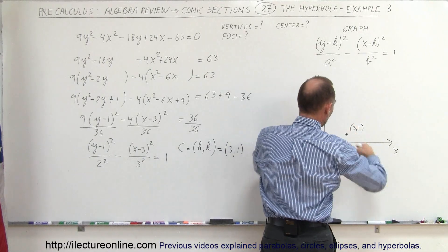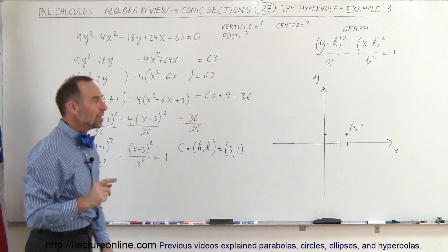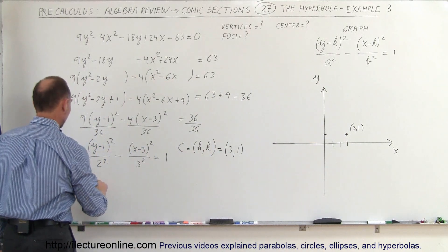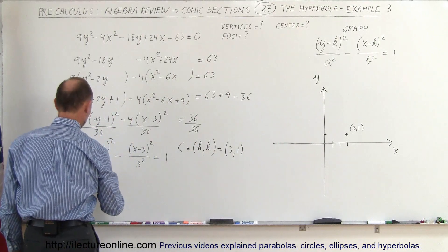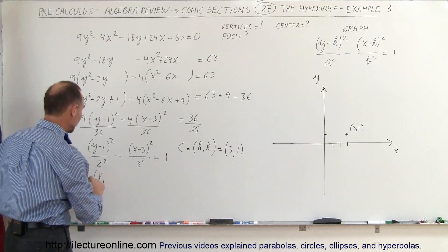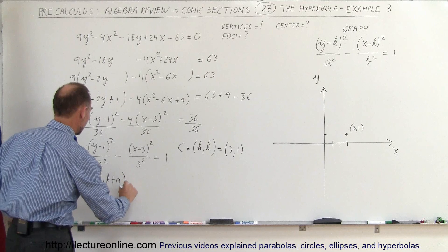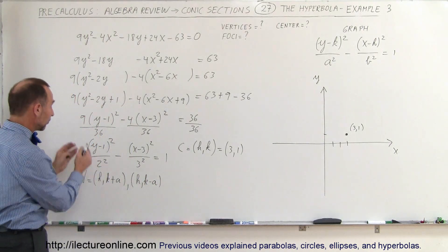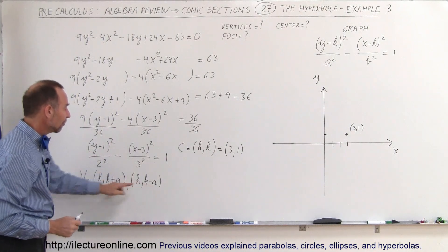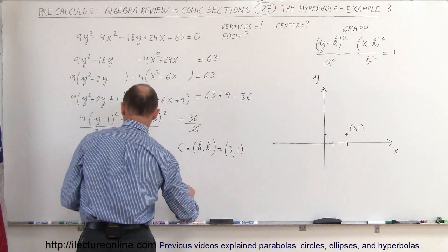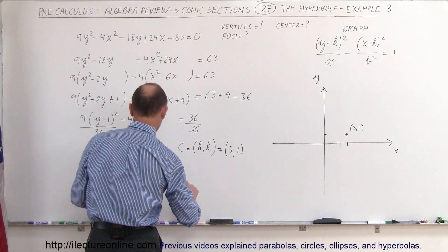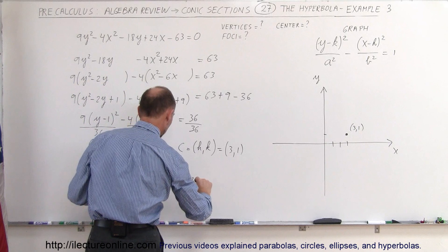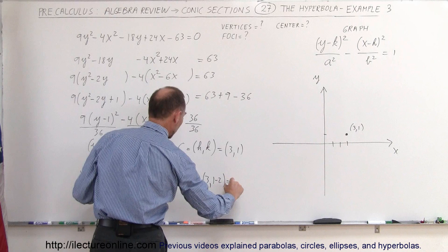The hyperbola opens up and down with a vertical transverse axis, so we find the vertices along the vertical line through the center. The vertices are found by keeping the x value at h equals 3, and taking k plus a and k minus a. Remember, a is always associated with the first variable — in this case y — so we add and subtract a from the y coordinate of the center. Here k is 1 and a is 2.